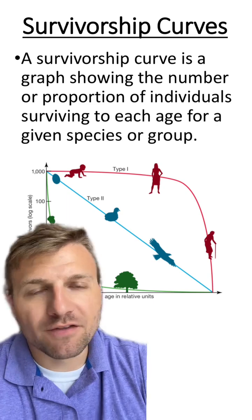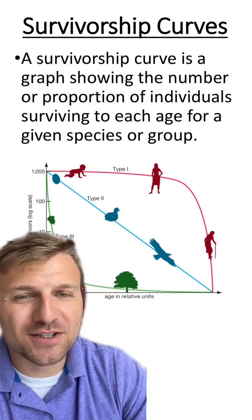There are three main types of survivorship curves. From our illustration, there are types 1, 2, and 3.